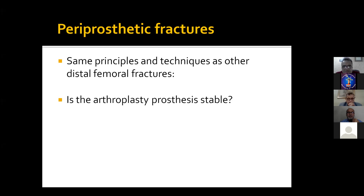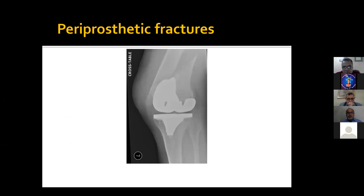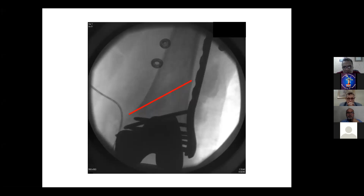Regarding periprosthetic fractures: they have the same principles and techniques as other distal femoral fractures, but the primary question is whether the arthroplasty is stable. If it is not stable, you should consider revising with a distal femoral replacement. If it is stable, you may try to preserve the prosthesis and fix the fracture using a fixation method that does not interfere with the prosthesis or its fixation.